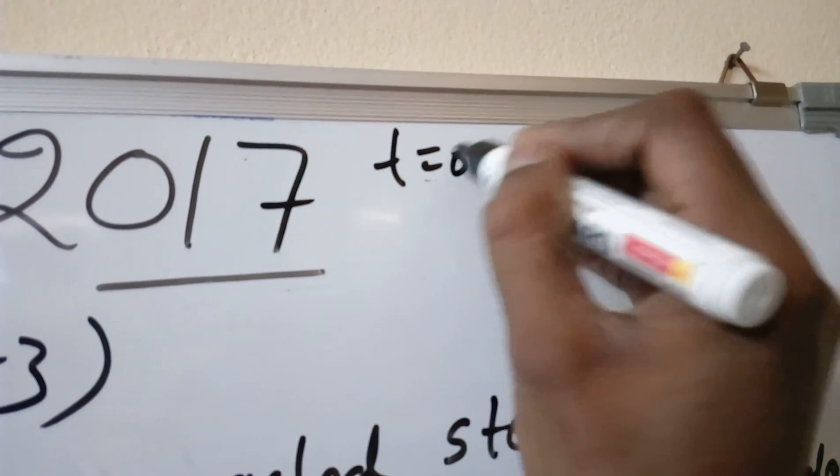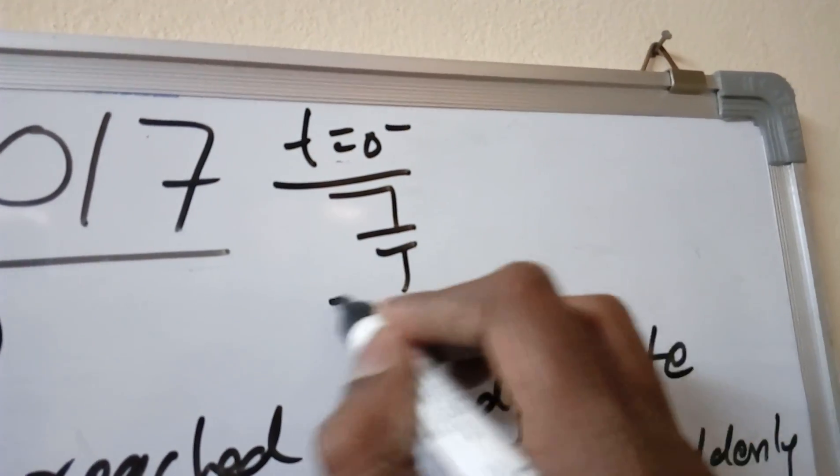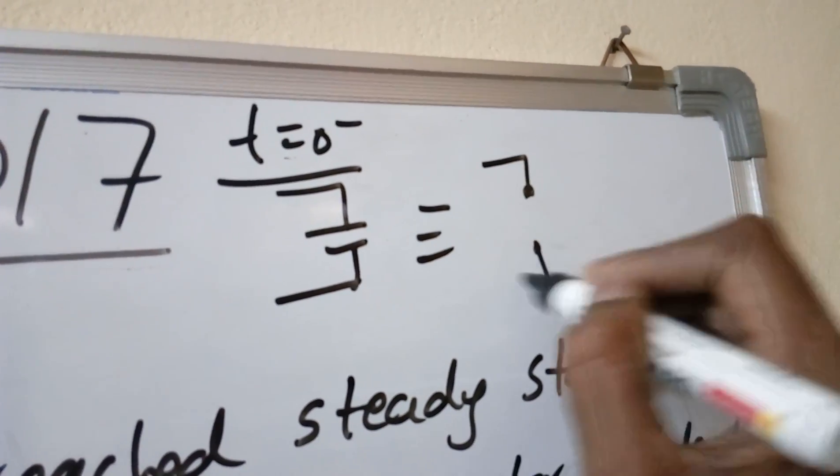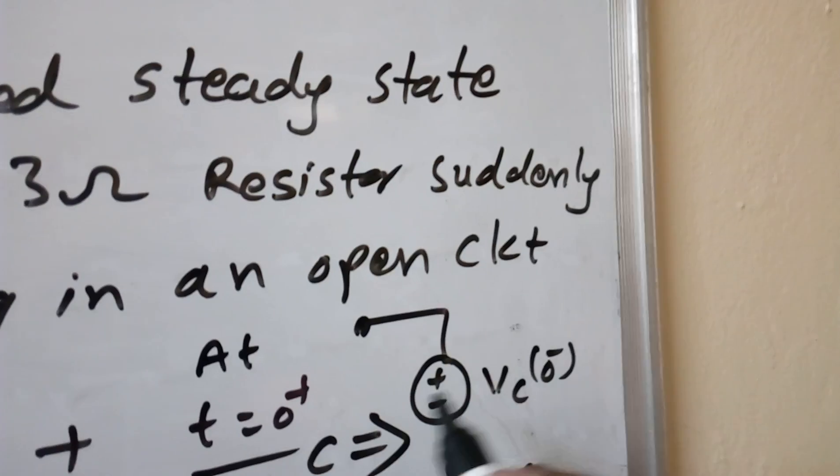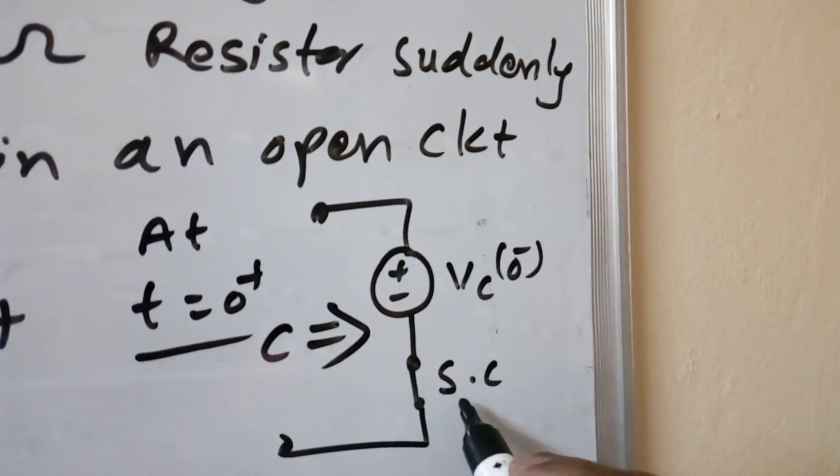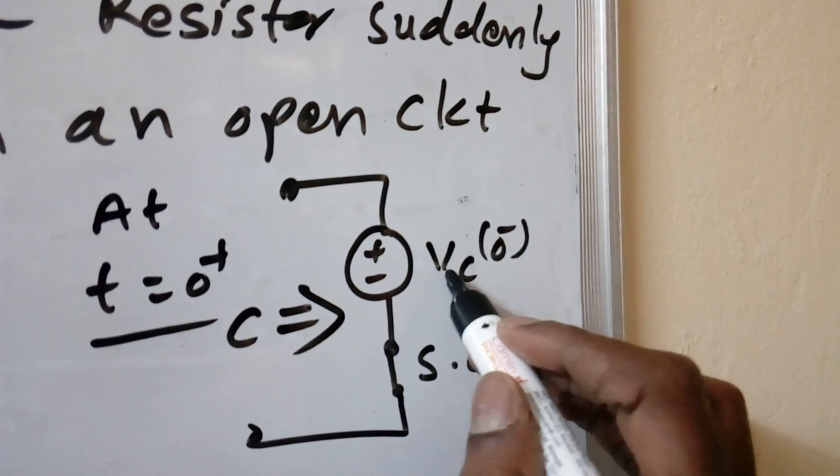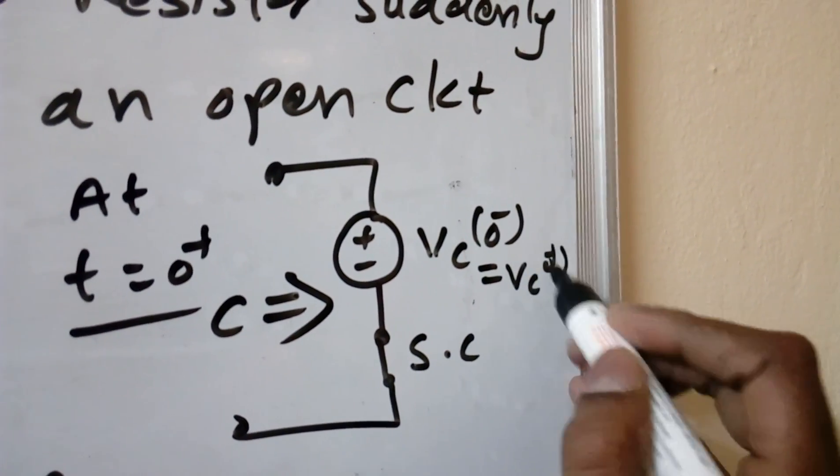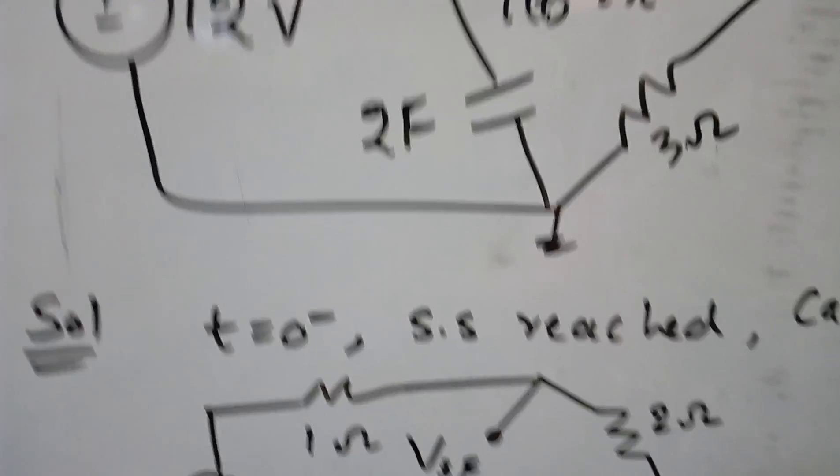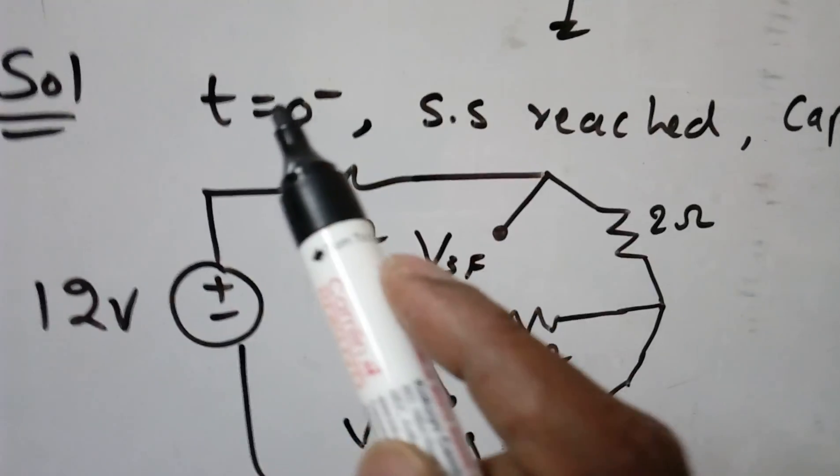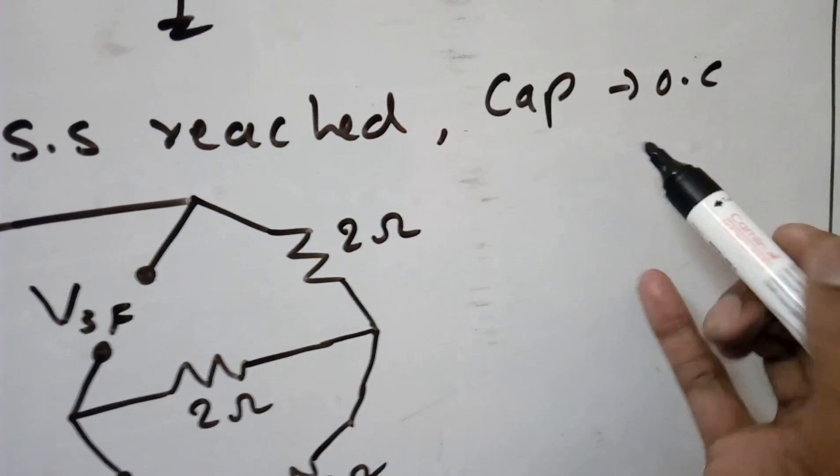At T equal to 0 minus, the capacitor reached its steady state. That means this capacitor will behave like an open circuit and we can find Vc(0-). Next condition is at T equal to 0 plus, capacitor will become short circuit but there is a voltage source, that is Vc(0-) is equal to Vc(0+). If you know these two concepts then we can easily solve. Now first we will draw the T equal to 0 minus circuit. At T equal to 0 minus, steady state is reached. That means capacitor will become open circuit.